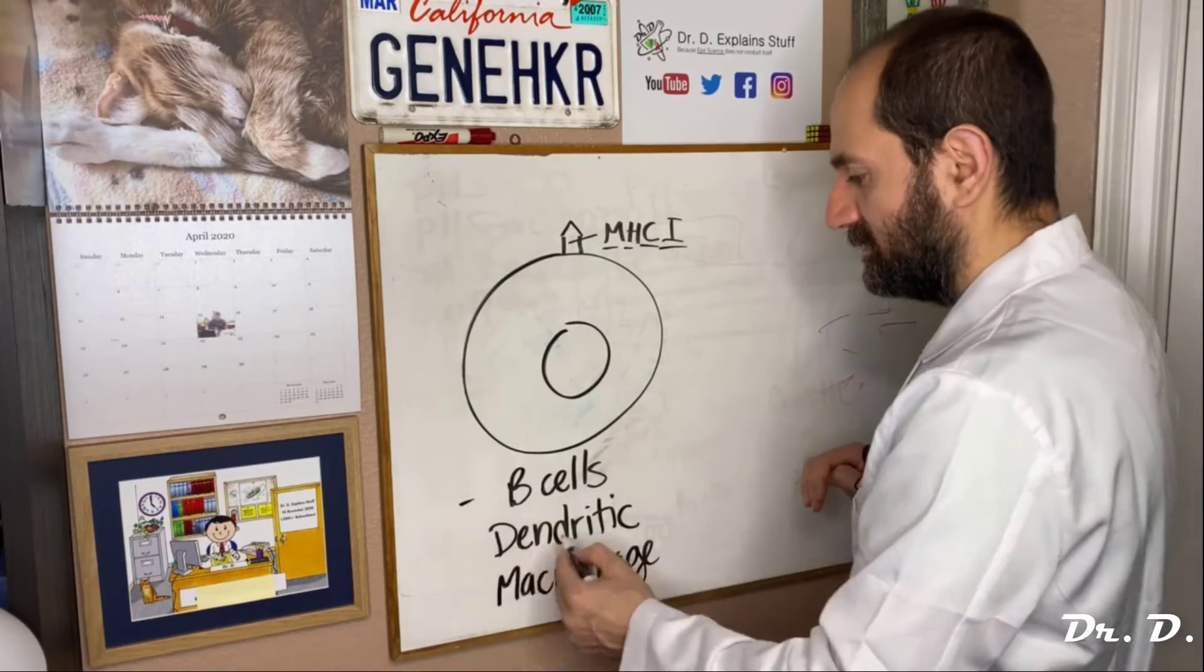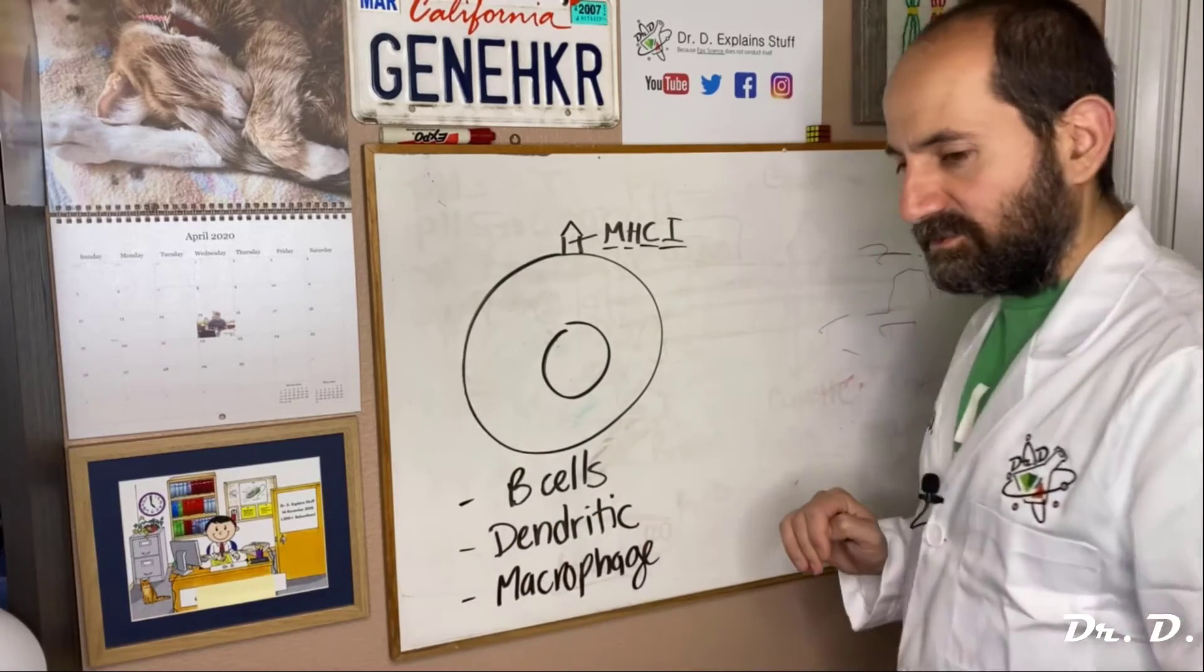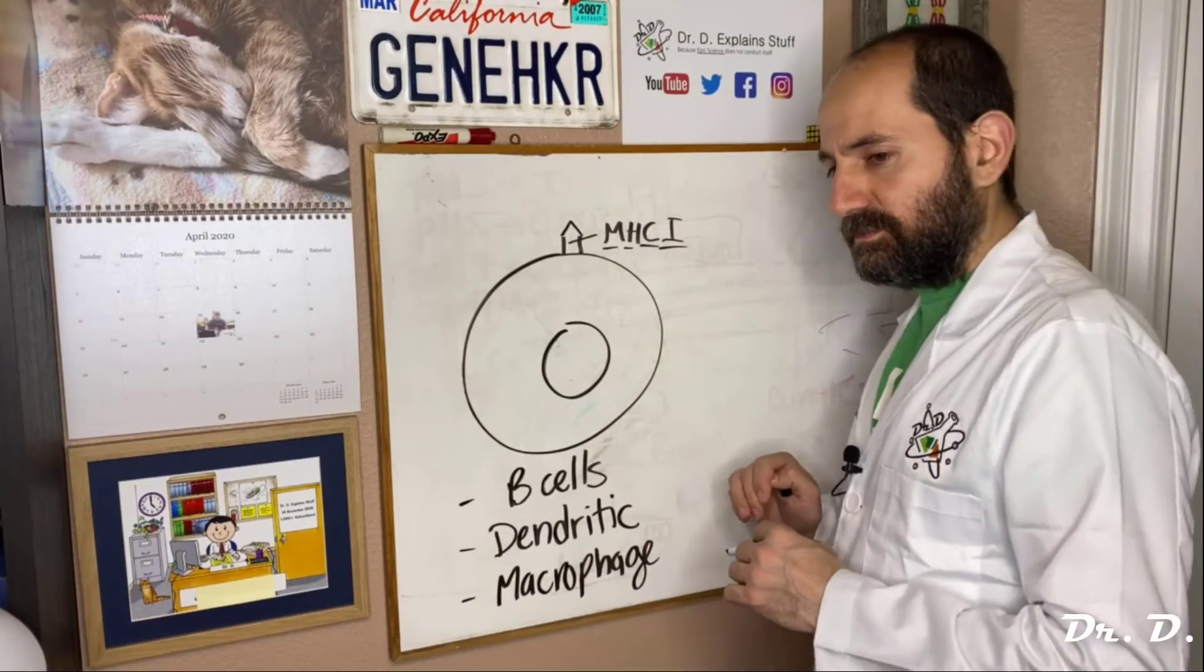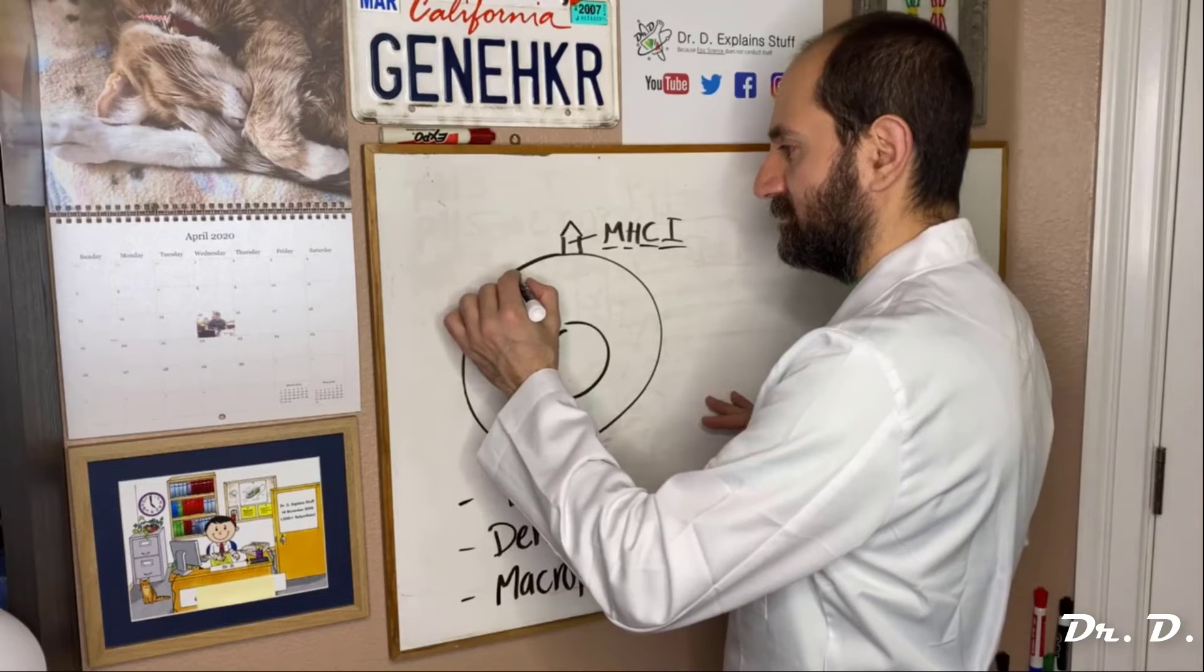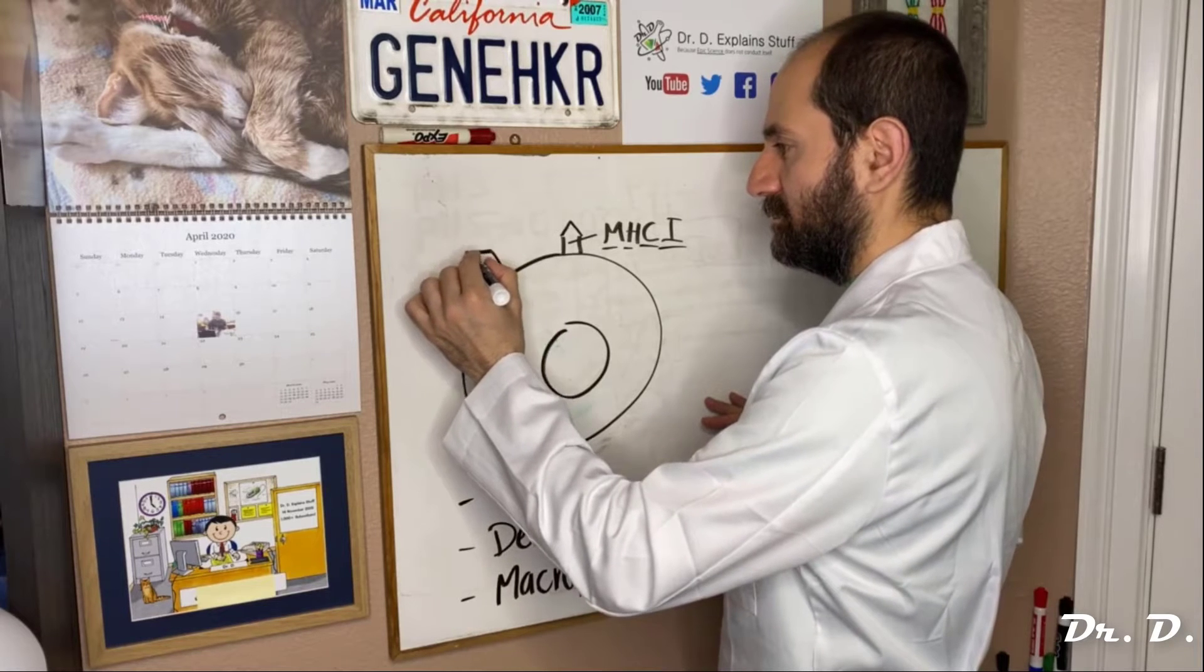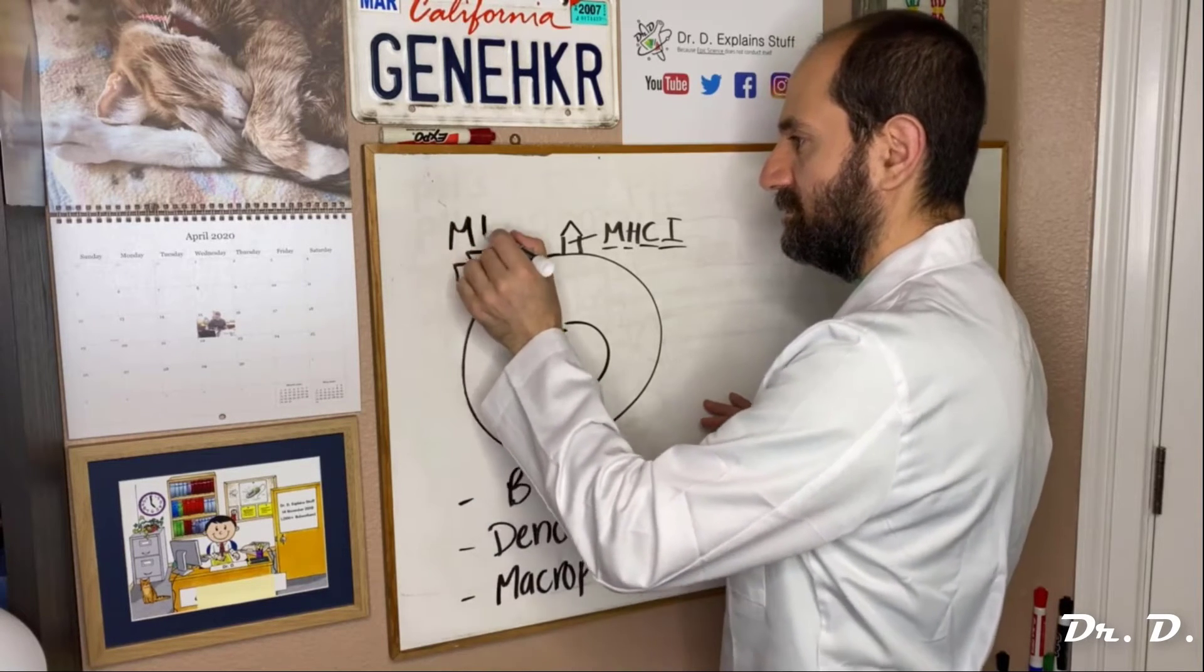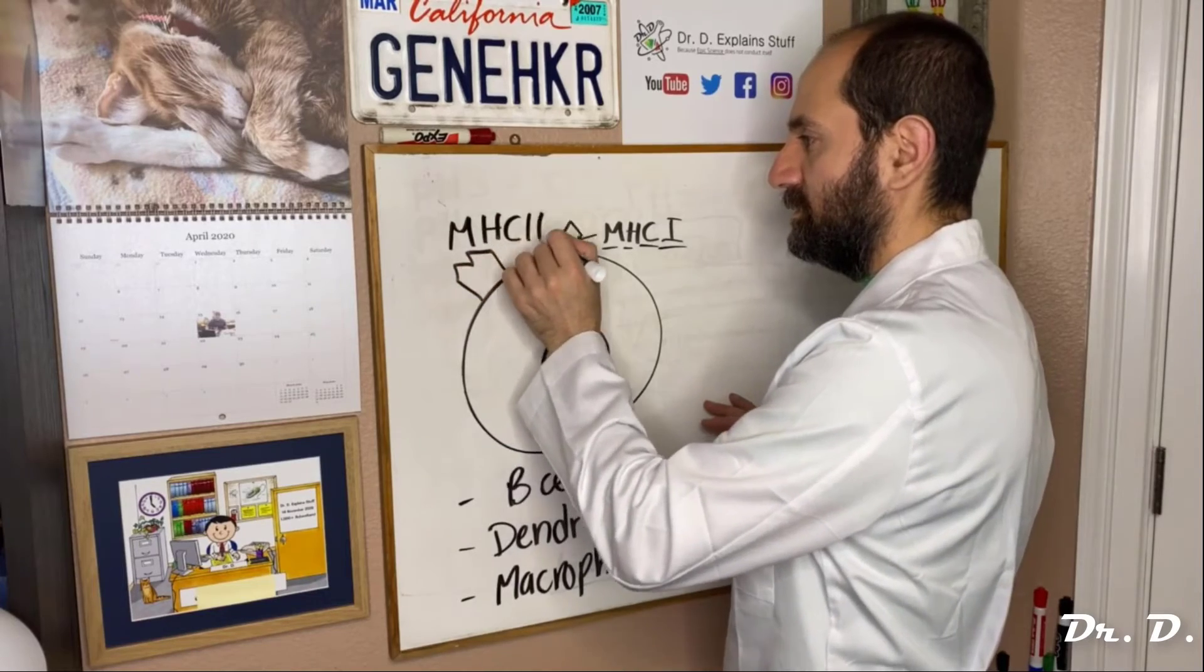The B cells, dendritic cells, and macrophages are the cells of your body that, in addition to having MHC1, also have MHC2.